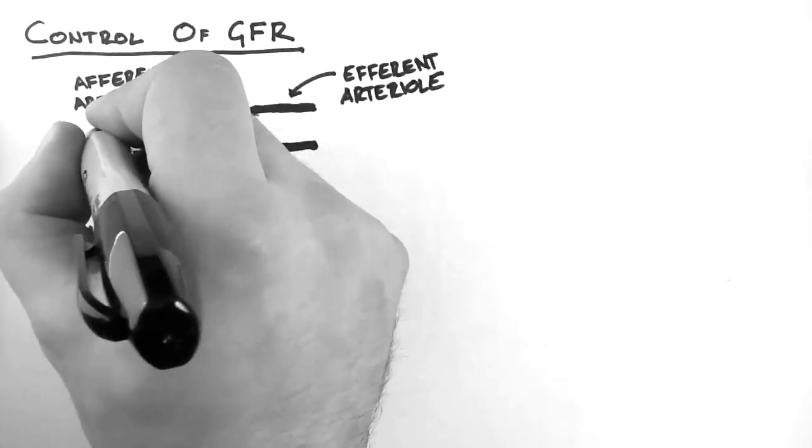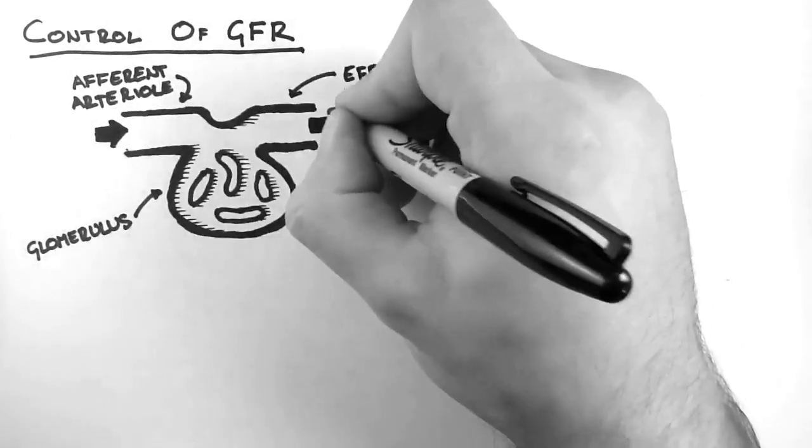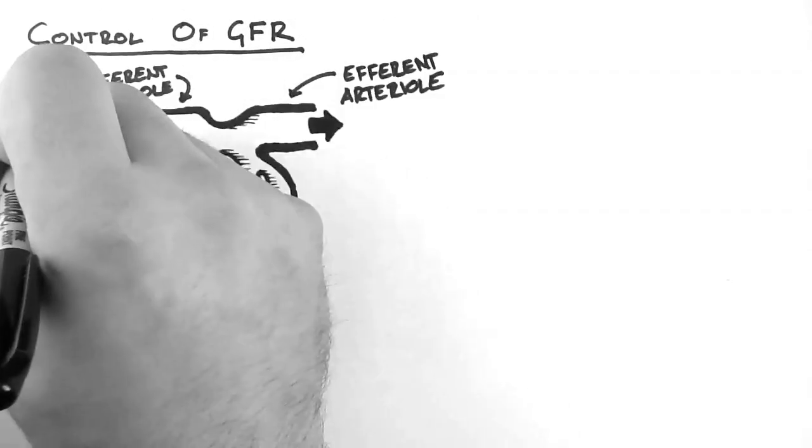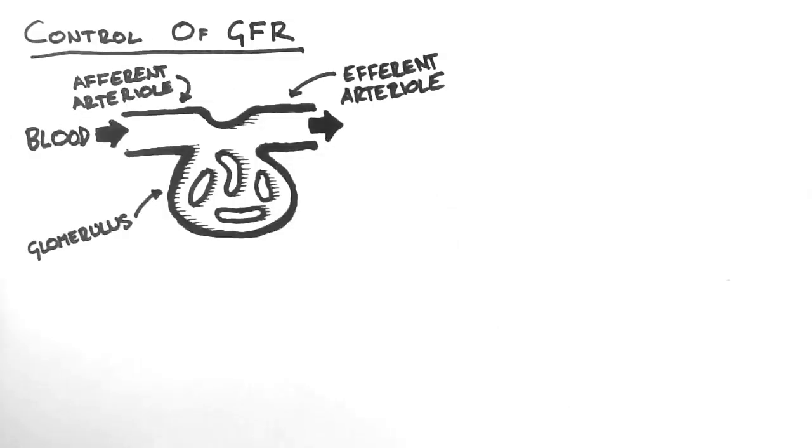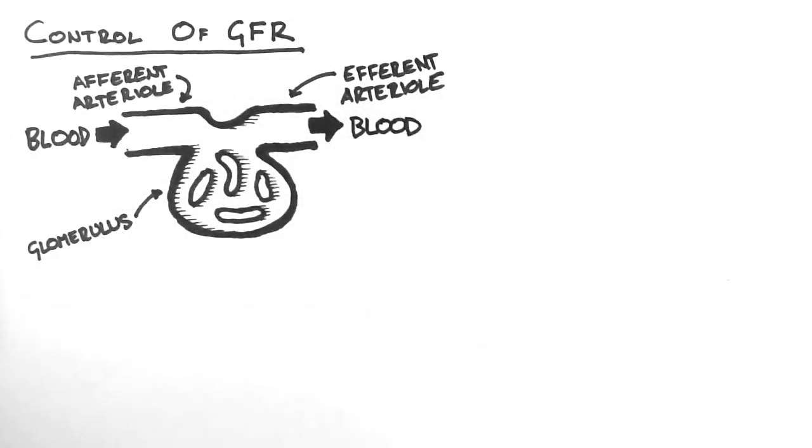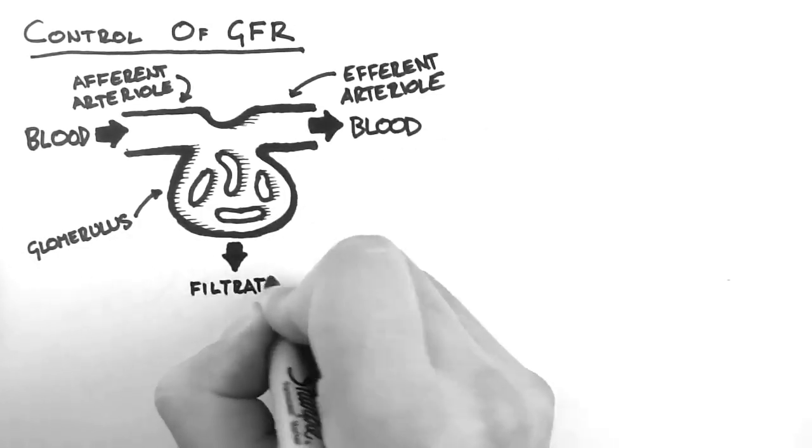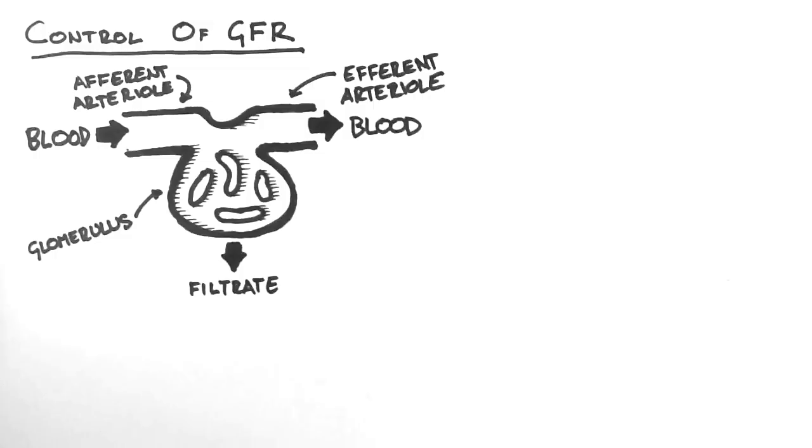Blood from the renal artery flows in through the afferent arteriole and then it can exit via one of two ways. It can exit as blood via the efferent arteriole or it can exit as filtrate via the glomerulus. However, remember that filtrate is not actually blood as it should not contain any blood cells or large proteins and thus is mainly water and small solutes.